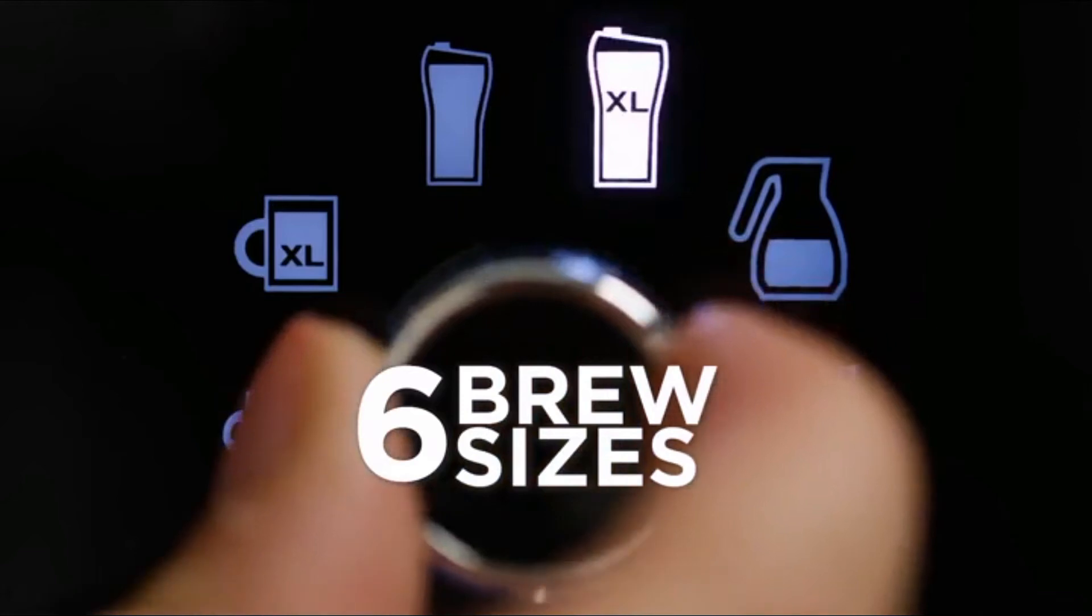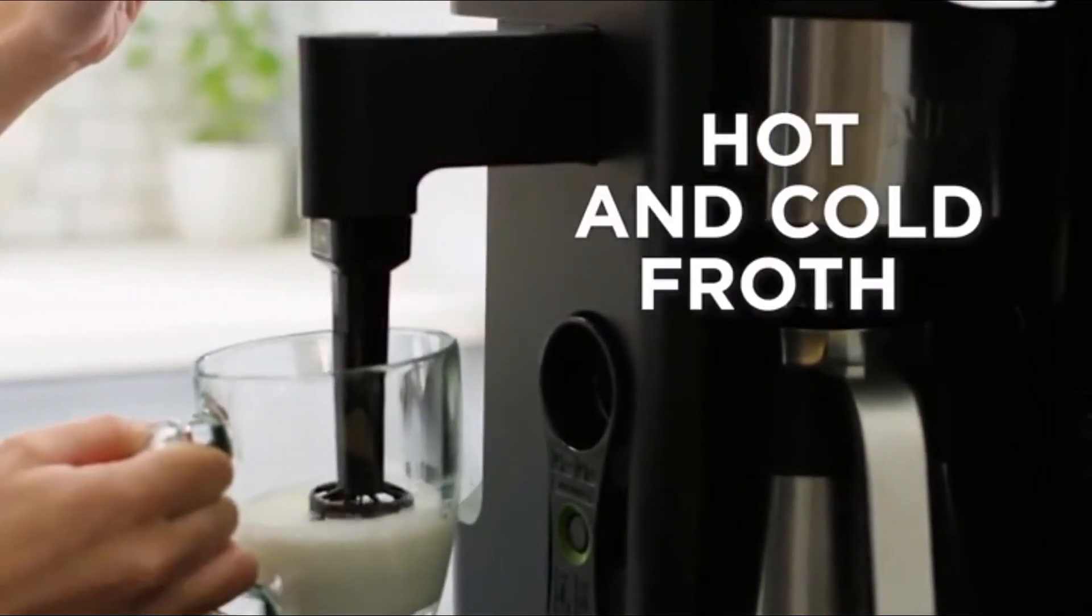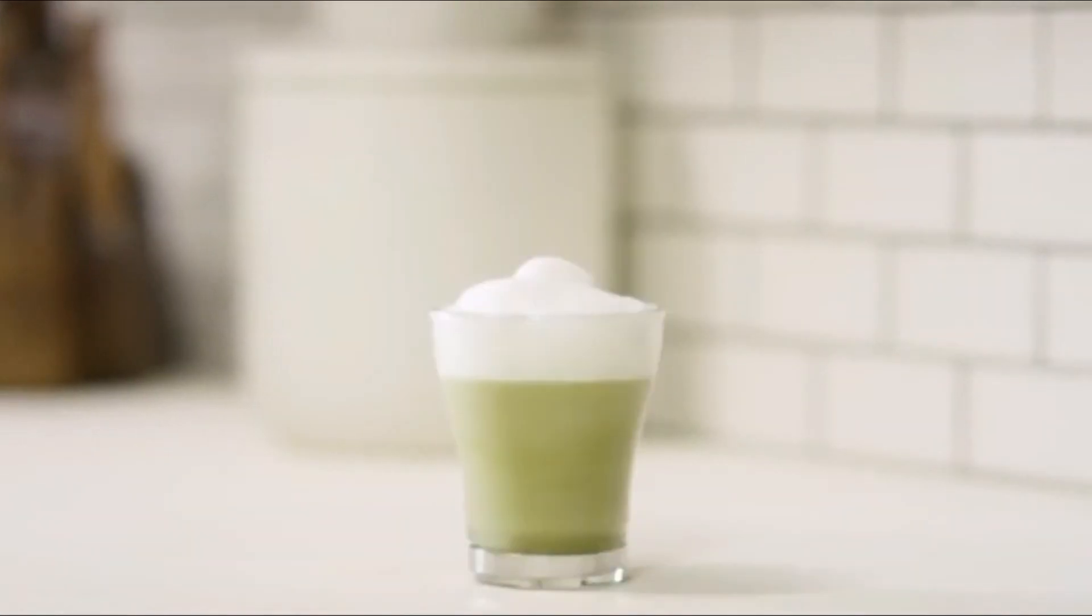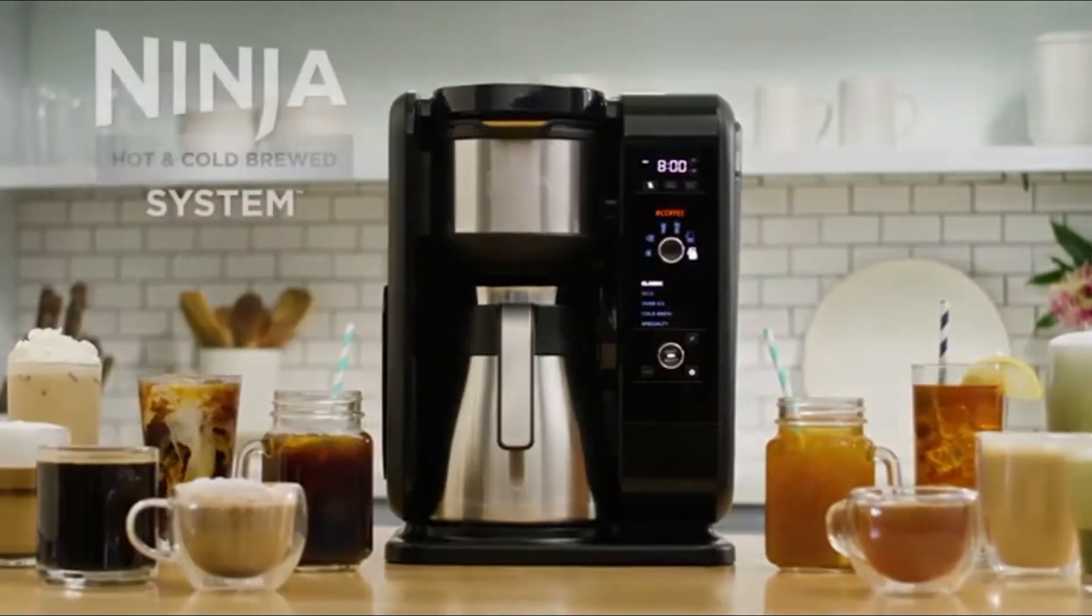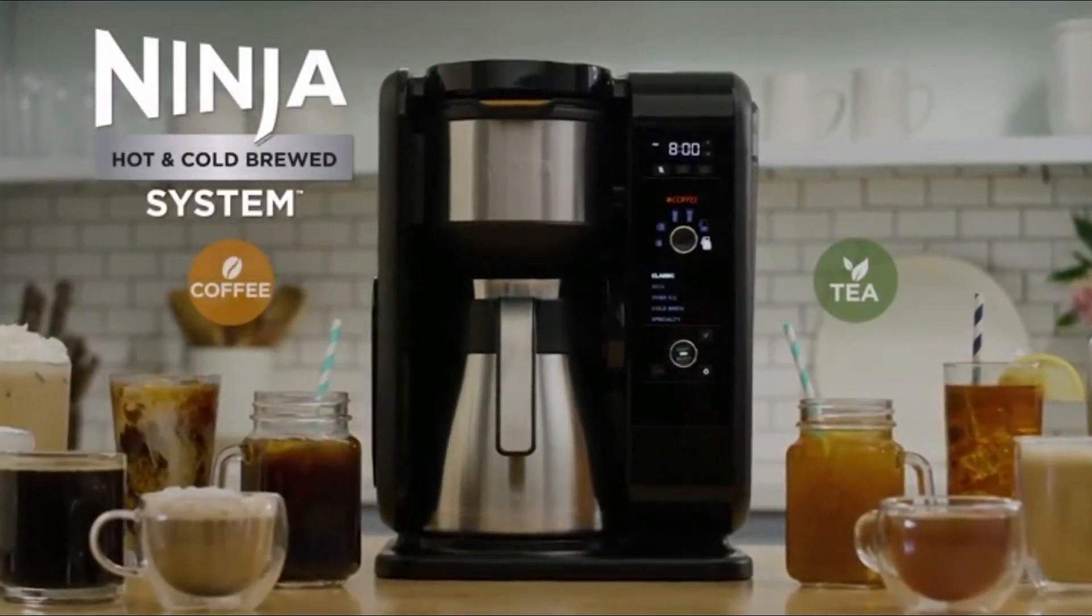Ninja claims that, using the specialty coffee setting and the included milk frother on the side of the machine, you can make coffee bar drinks at home. That's true if you're not super fussy about the quality of the coffee in your lattes, as the machine brews strong coffee but not espresso like the coffee shops.